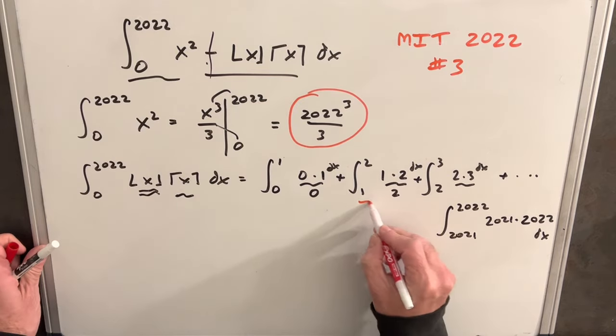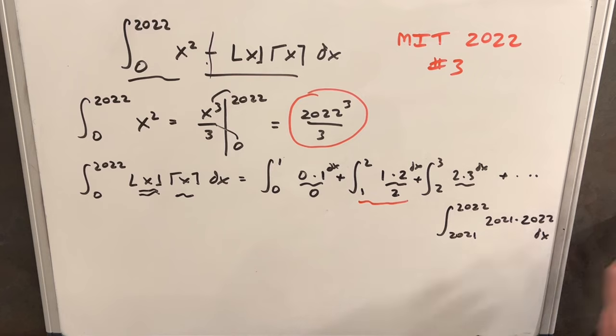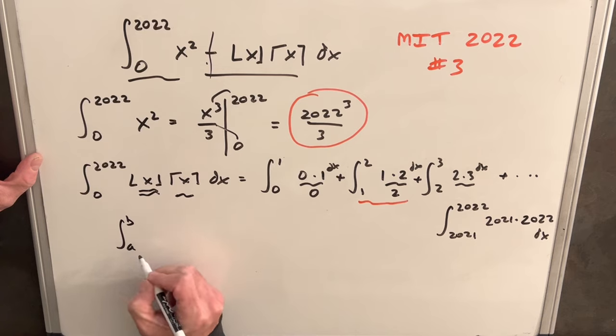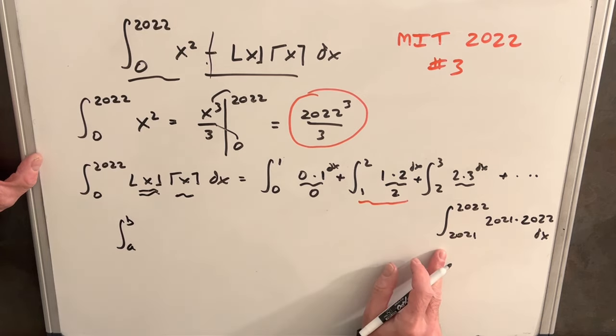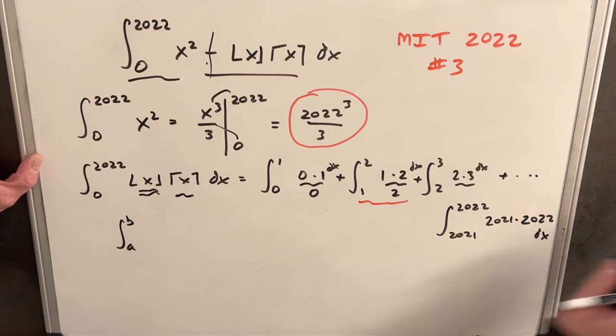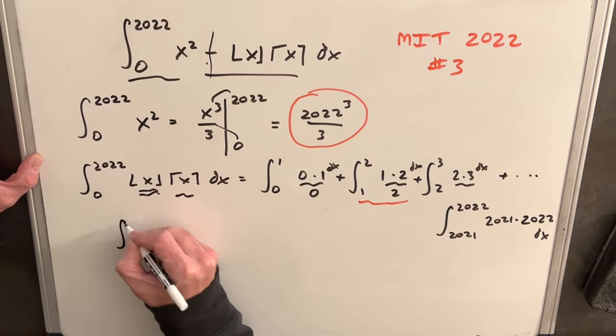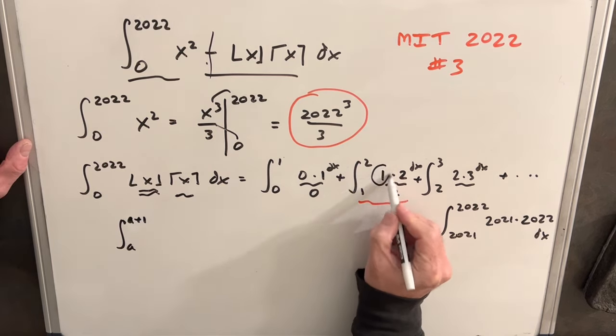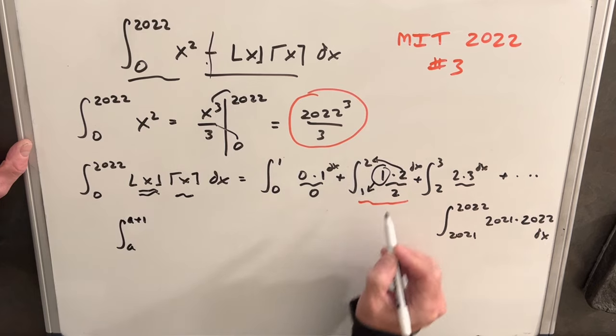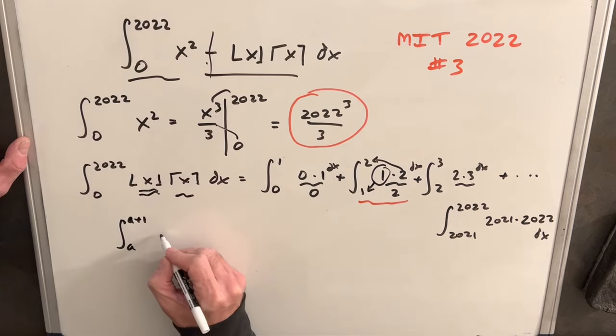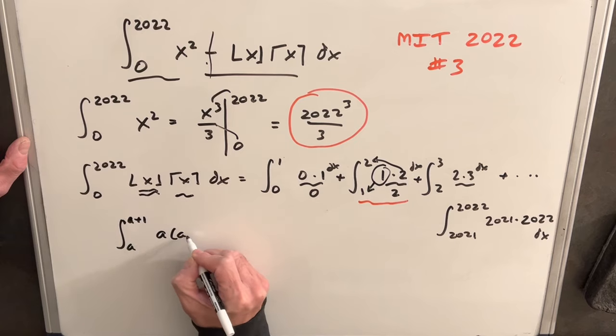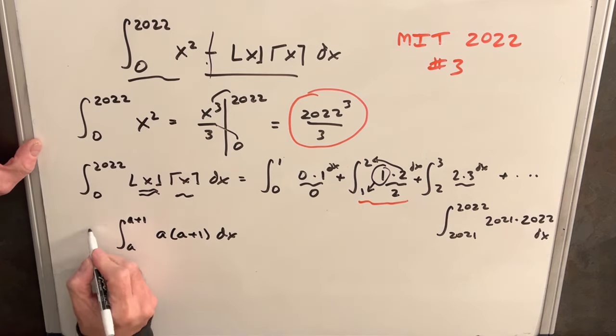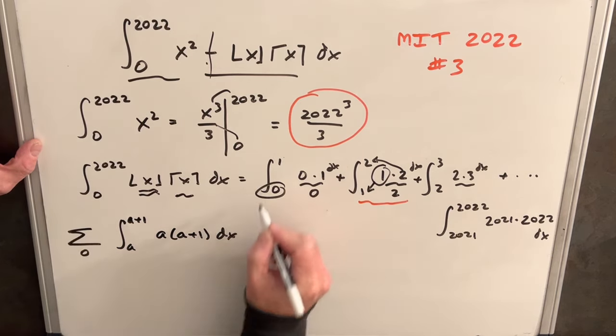I want to break out one of the 2,000 sub-integrals. We can write it as an integral from B to A, but they're all separated by a region of 1. So we could write this as A plus 1 to A. Notice what we have plugged in here is actually A, and this is A plus 1. So we can write it as A times A plus 1 dx.